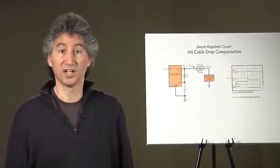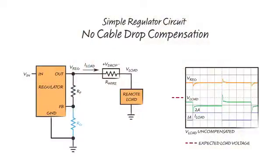Wire resistance causes a common problem in power distribution. When a load draws current through a long or thin wire, wire resistance causes an IR drop that reduces the voltage at the load.